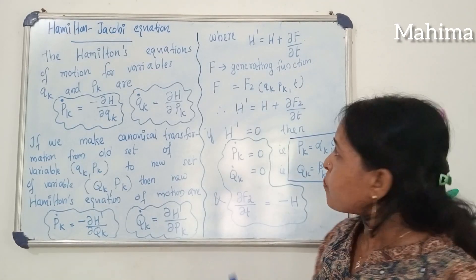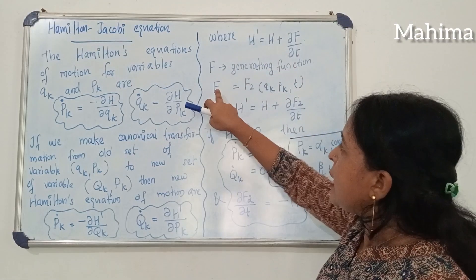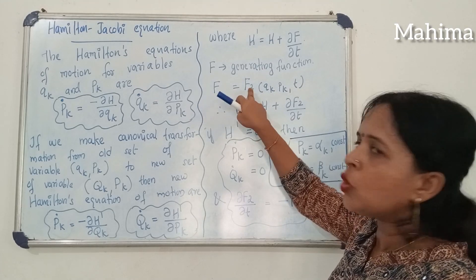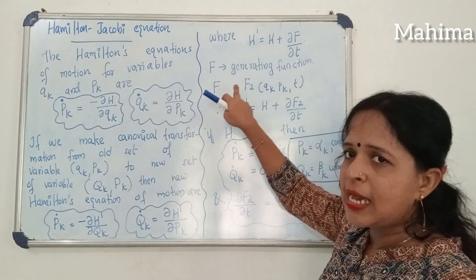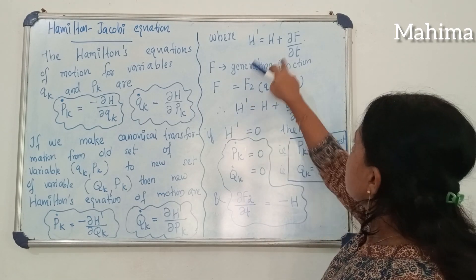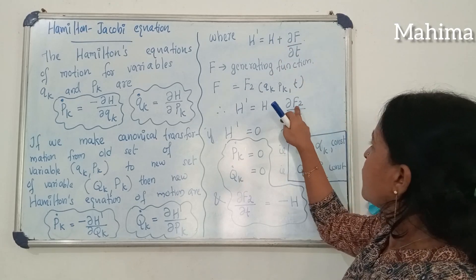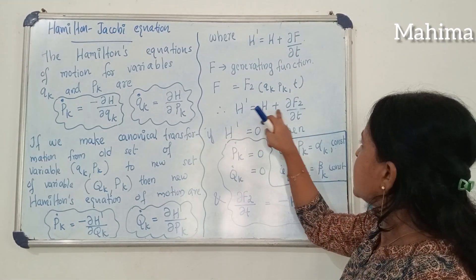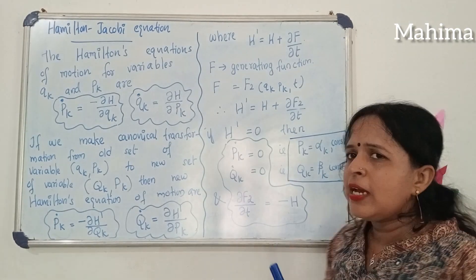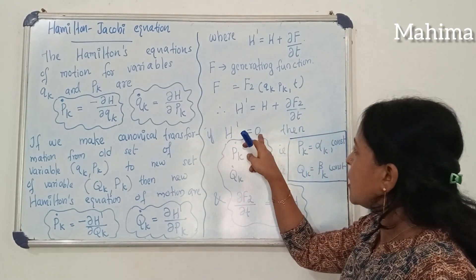Here F is a generating function, and F can be a function of qk, pk and t. We take F as F2, where F2 is a function of qk, pk and t. Substituting, H' is equal to H plus del F2 divided by del t. Then we take the new Hamiltonian function equal to zero, that is H' is equal to zero.